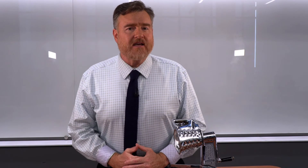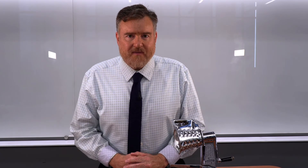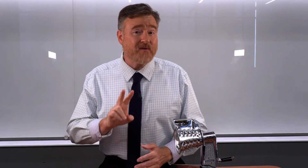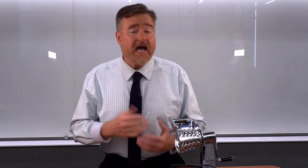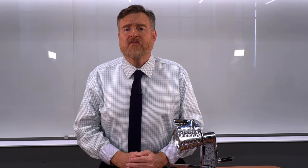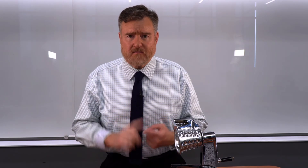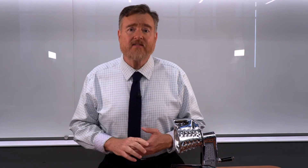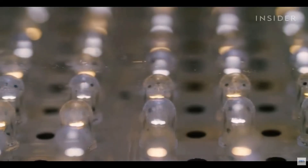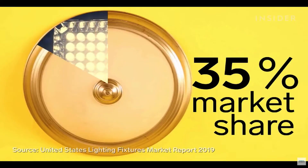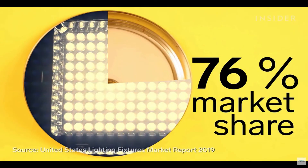But are there any good pie charts, you ask? Well, I looked around and found two that I think pretty well work, and both work for really the same reason — they're only using a small number of categories, and they're not asking you to make precise comparisons. This first example shows an increase in market share for a certain type of light fixture. The use of animation shows growth, and the pie displays the data honestly. This one actually works.